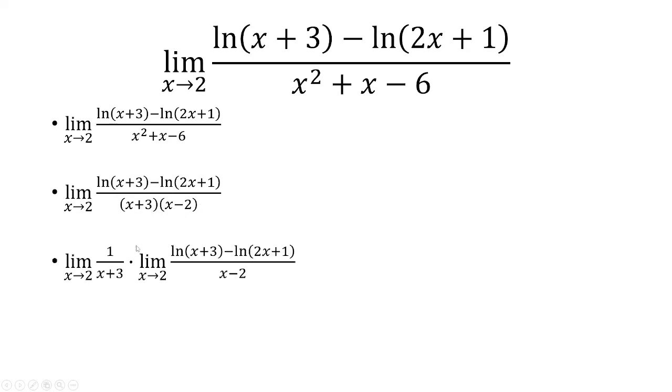And now we can break this up into two separate limits. The first limit is going to have 1 over x plus 3. The second limit will have everything else. Now, if I plug in x equals 2 for 1 over x plus 3, I get 1 fifth. And that multiplies the limit.